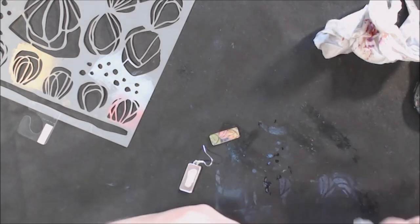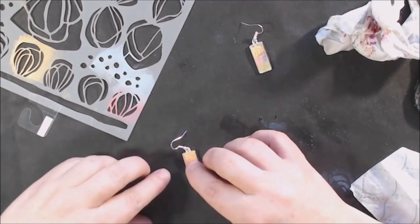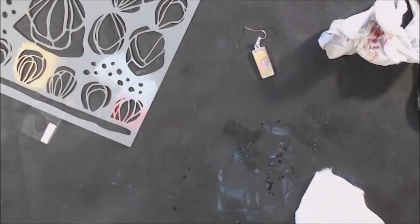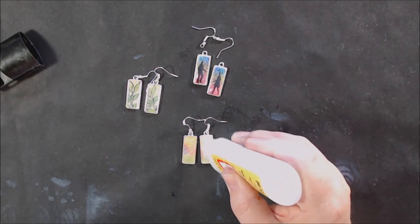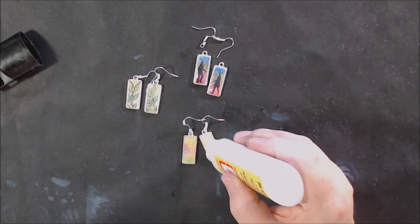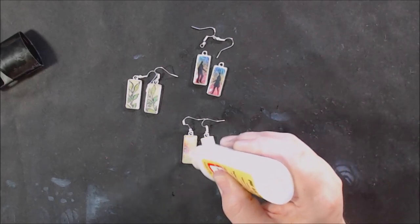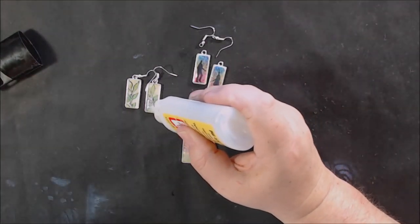And then I glued that side down and then I put some extra of the dimensional magic over the top to make it extra shiny and kind of a plastic, you know, top. If you've enjoyed this video on making shrink plastic stenciled earrings, be sure to give it a thumbs up.